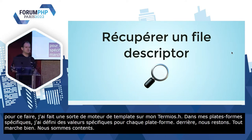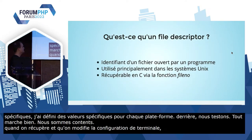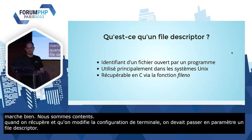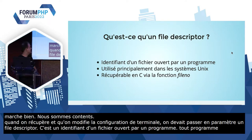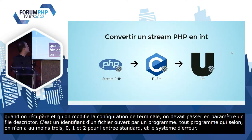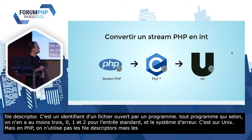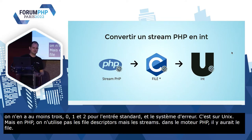Quand on modifiait la configuration d'un terminal, on devait passer en paramètre ce qu'on appelle un file descriptor. Un file descriptor, c'est un identifiant d'un fichier ouvert par un programme. Tout programme qui se lance a généralement au moins trois : 0, 1 et 2 pour l'entrée standard, la sortie standard et la sortie d'erreur. C'est principalement utilisé par les systèmes Unix, et en C vous pouvez le récupérer via la fonction fileno. Le problème, c'est qu'en PHP on n'utilise pas des file descriptors, on n'utilise pas des objets file, on utilise des streams. En principe, il y a un stream, puis en dessous dans le moteur PHP il y a un file, et puis en dessous il y a le fileno. Il va falloir récupérer tout ça, et malheureusement PHP ne propose pas de fonction standard pour le faire.